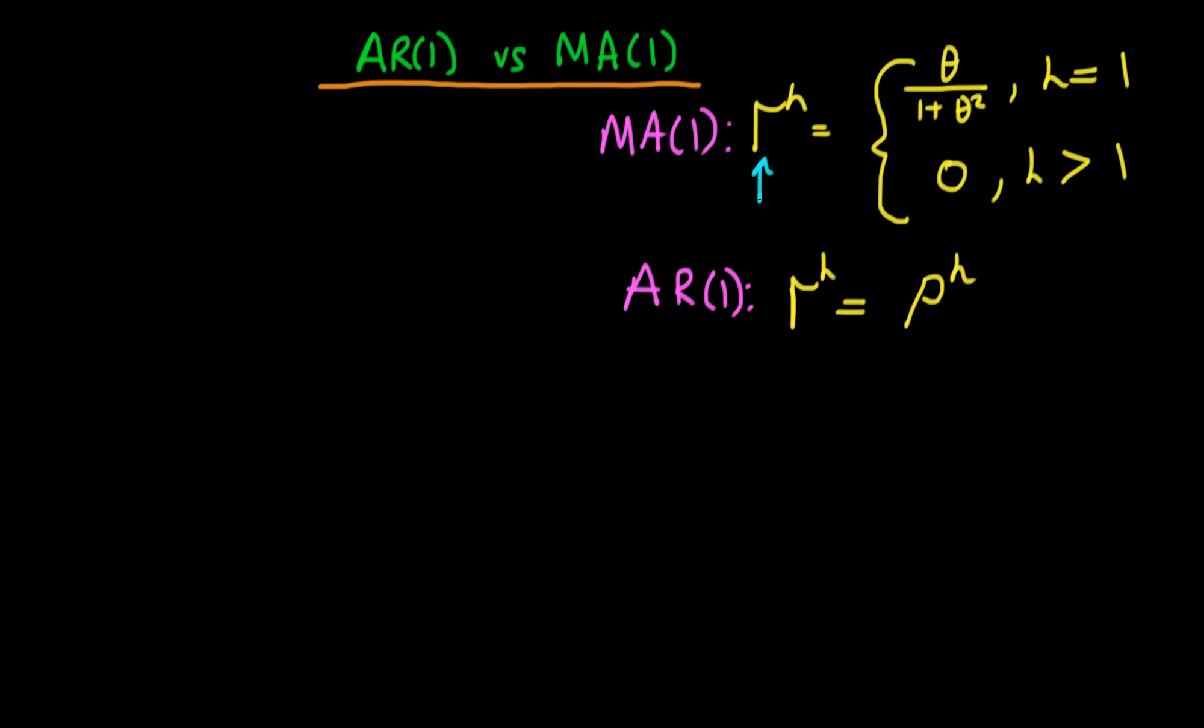So the correlation for the H-th step in the future. One way to diagnose whether you have an MA(1) process or an AR(1) process is to get your statistical software program to draw a correlogram.